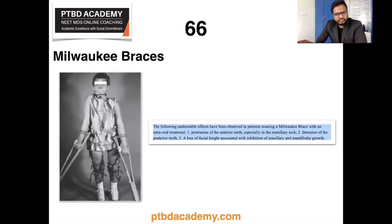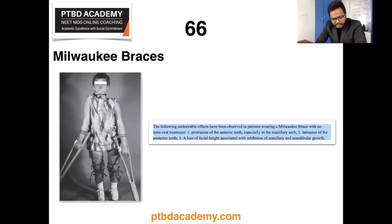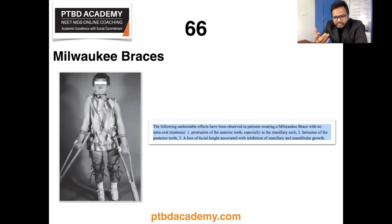Milwaukee braces were developed by Dr. Walter Blount of Milwaukee in the 1940s as a removable post-operative immobilization device for treatment of neuromuscular scoliosis patients. Undesirable dental effects associated with long-term use include especially ventral complications, protrusion of anterior teeth especially in the maxillary arch, intrusion of posterior teeth, and loss of facial height associated with inhibition of maxillary and mandibular growth.